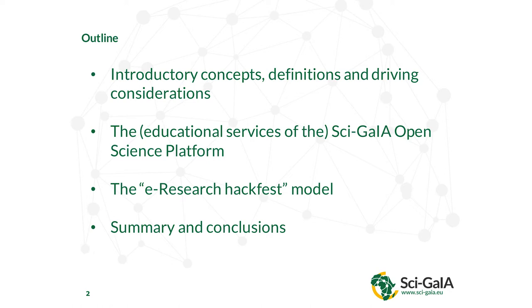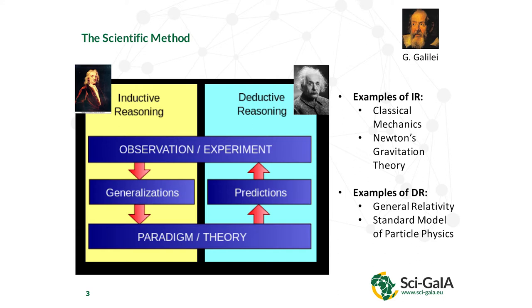I'll start from the same point I started yesterday: scientists in the world apply an iterative procedure that we call, since Galileo Galilei and the beginning of the 17th century, the scientific method. We have several flavors of the scientific method, but we start from the experiment, we try to generalize, and we build a theory. This was the approach in the 17th, 18th, and 19th century.